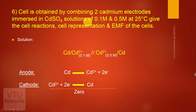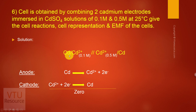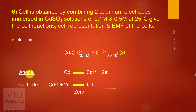Next problem: a cell is obtained by combining two cadmium electrodes immersed in cadmium sulfate solutions of 0.1 M and 0.5 M at 25°C. Give cell reactions, cell representation, and EMF. The cell is represented as: Cd | Cd²⁺ (0.1 M) || Cd²⁺ (0.5 M) | Cd, since 0.1 M is the lower concentration acting as anode.